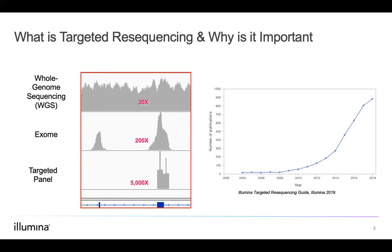The ability to detect low-frequency variants can enable the identification of novel functional variants, facilitate biomarker discovery, or lead to the identification of clinically relevant targets for translational research. Targeted resequencing is particularly useful for the discovery of somatic variation in complex samples such as cancerous tumors mixed with germline DNA. Whether performing cancer studies, microbial genomics, agrogenomics, or molecular epidemiology, researchers can target regions of the genome relevant to their specific interests.